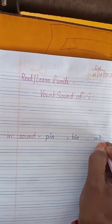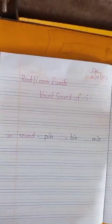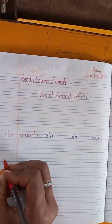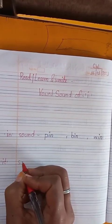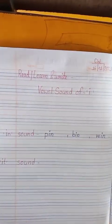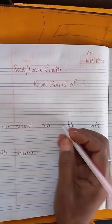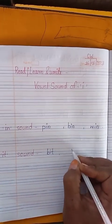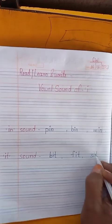Next, write karenge. One line leave karenge, write karenge: I-T, it sound. S-O-U-N-D, it sound, sound me write karenge: B-I-T bit, F-I-T fit, S-I-T sit. Okay?